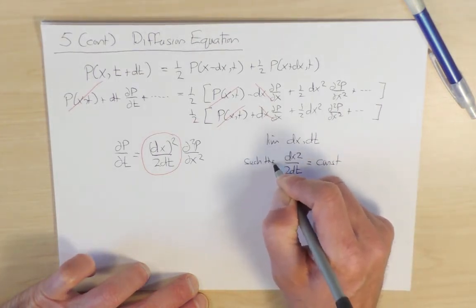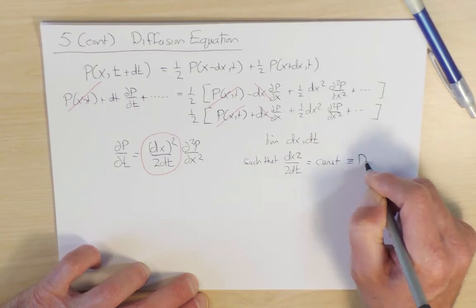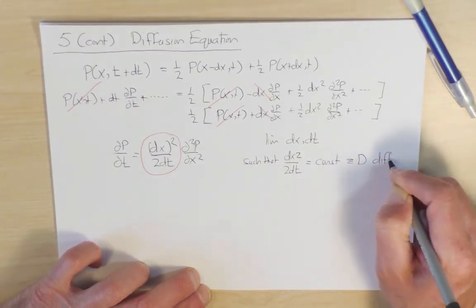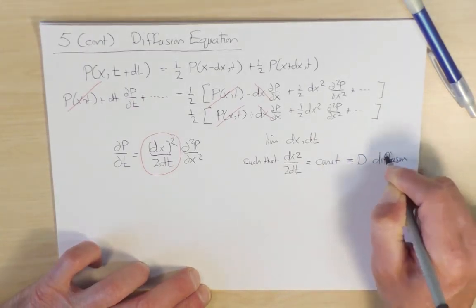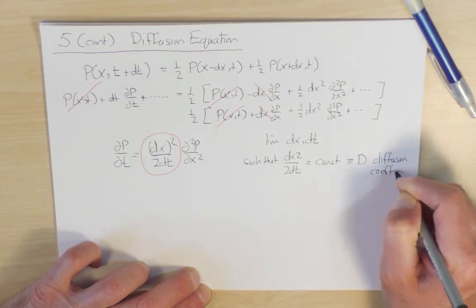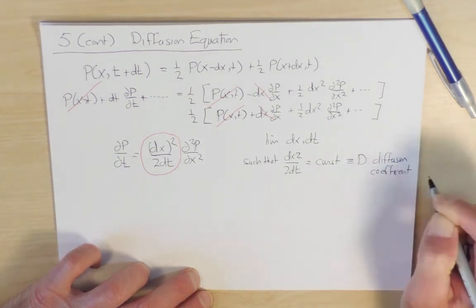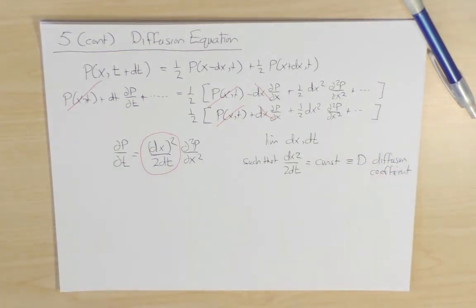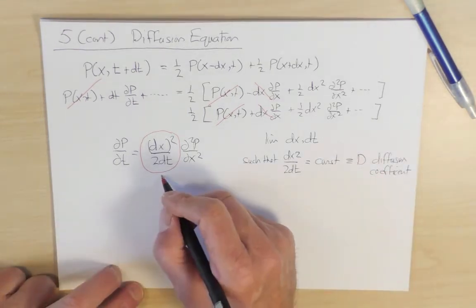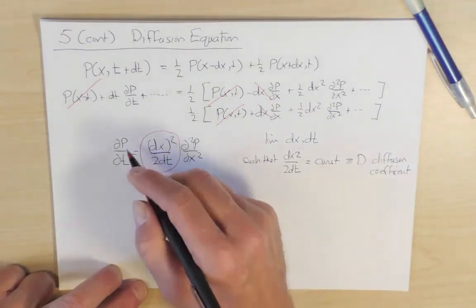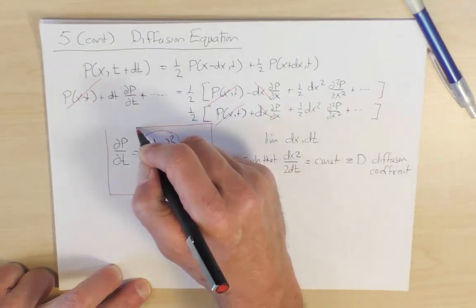This constant is known as the diffusion coefficient. And it plays a fundamental role in all types of transport processes. So here, this is called the diffusion coefficient. And this entire equation here is called the diffusion equation.